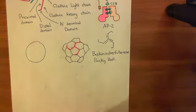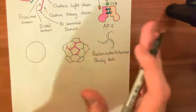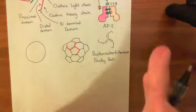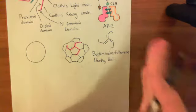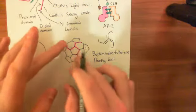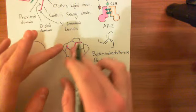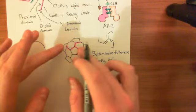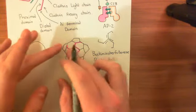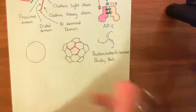The clathrin triskelions connect together — they overlap. It's not a perfect tessellation. They overlap on these lines, and you'll have multiple clathrin heavy chains on each one of these lines. But the point is they assemble into this sort of football-like structure.